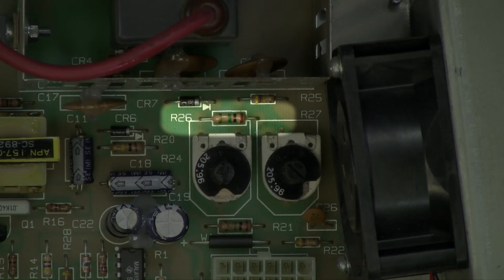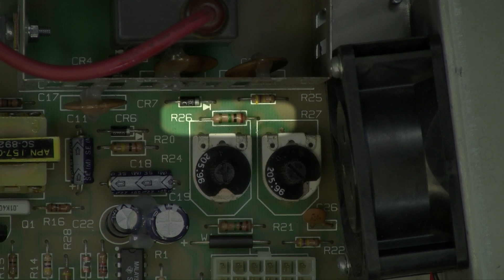It has a brown stripe, a black stripe, a green stripe, and a gold stripe, which makes it a one megaohm resistor.